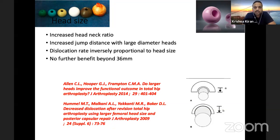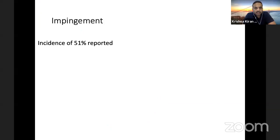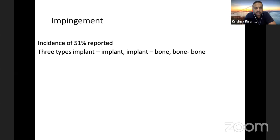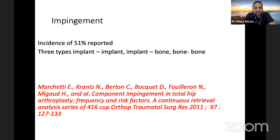There is a 51% reported incidence of impingement in the literature. There are three types: implant-to-implant impingement (neck impinging on the liner or acetabular rim), implant impinging on bone (such as an anterior acetabular osteophyte impinging on the femoral neck), and bone-on-bone impingement when offset is not properly restored. If impingement occurs in flexion, the hip dislocates posteriorly; in extension, it dislocates anteriorly. Impingement must be checked intraoperatively and avoided at all costs by carefully removing osteophytes and restoring hip length and offset. Whenever something impinges, it acts to lever the femoral head out of the acetabulum.